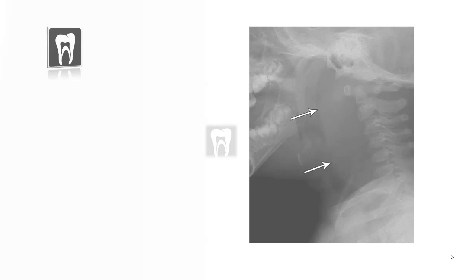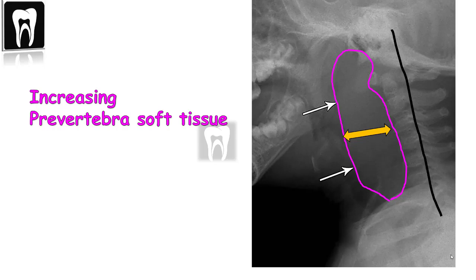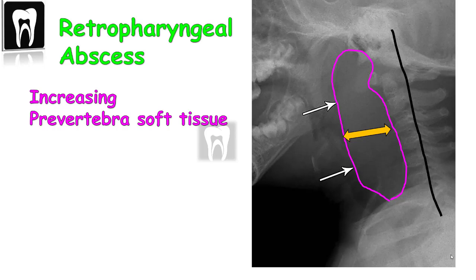In this case, we see an increase in the prevertebral soft tissue in a patient with difficulty breathing and fever. There is also loss of the cervical lordosis — the cervical spine is straight. This is diagnosed as a retropharyngeal abscess, and this is also an airway emergency.